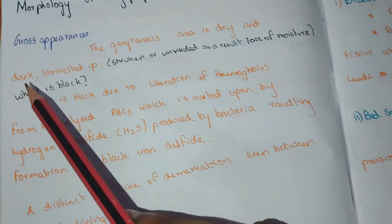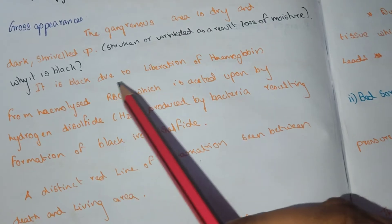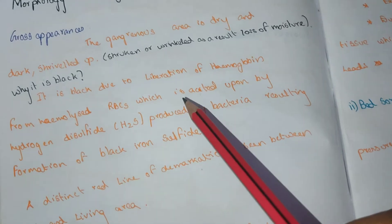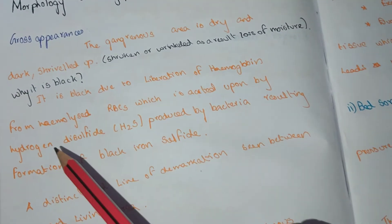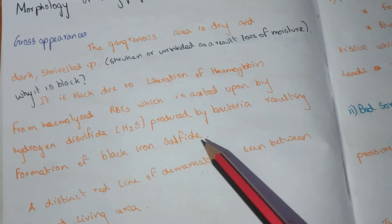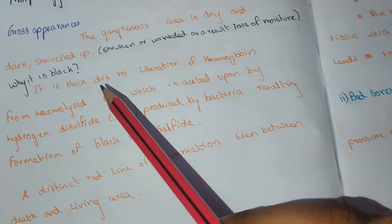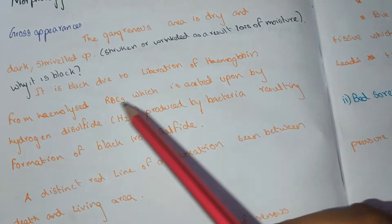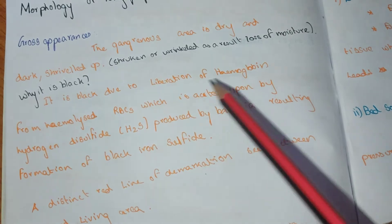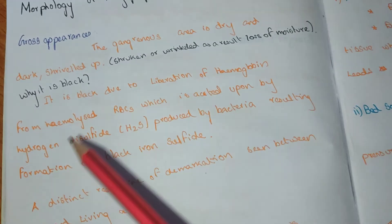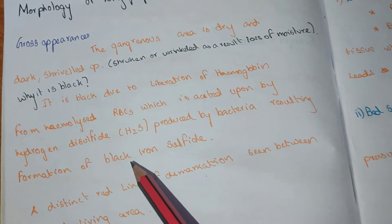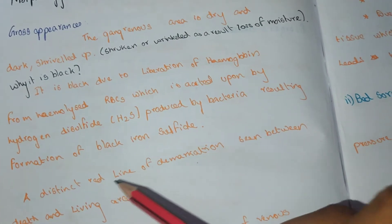The gangrenous area appears black or dark in color due to the liberation of hemoglobin from hemolyzed red blood cells. The released hemoglobin is acted upon by hydrogen sulphide produced by bacteria, resulting in the formation of black iron sulphide.